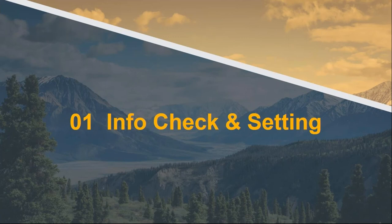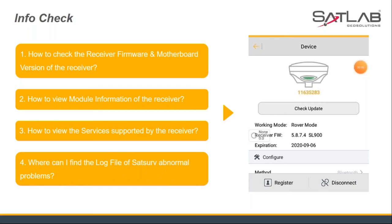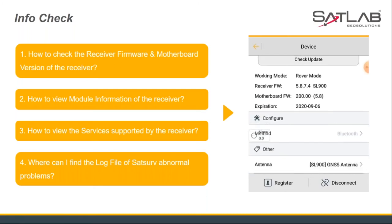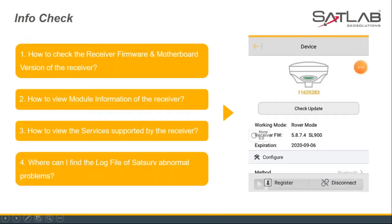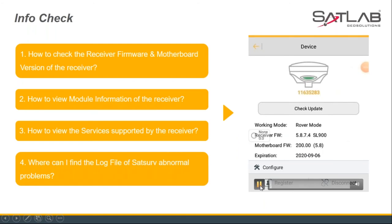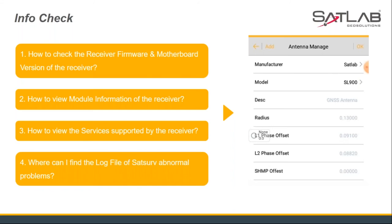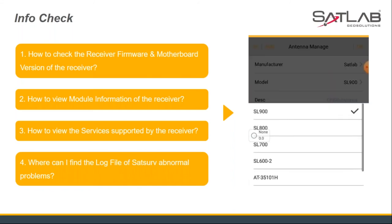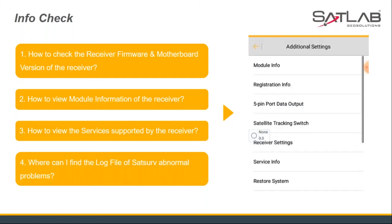Let's start from the first part: information check and setting. Users often need to check receiver information in daily use or when technical problems occur, including firmware version, model information, service information, and sometimes log files. From the video on the right, we can see how to check this information. In the device connection page, you can find the receiver firmware version. For the motherboard firmware, you need to click the serial number continuously to make the motherboard firmware appear. Antenna information can also be checked on this page.